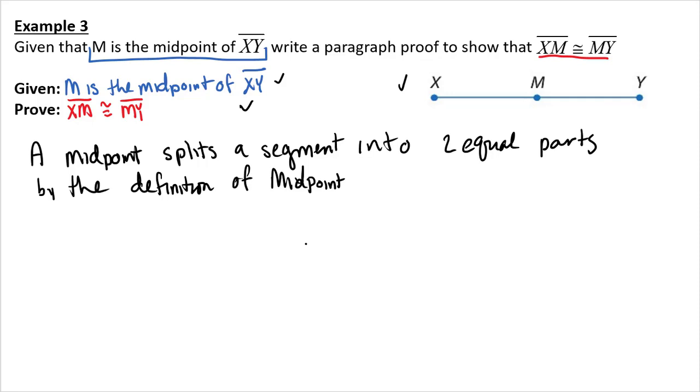What I don't like that I just wrote is I first have to start with the given. So, my first sentence should be, We are given that M is the midpoint of XY. So, first you just write out your given. Then you say something about that. A midpoint splits a segment into two equal parts by my reason. This is my reason right here.